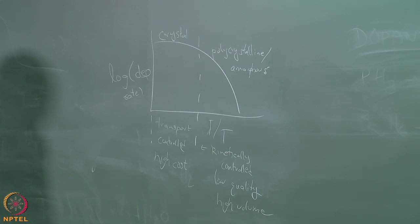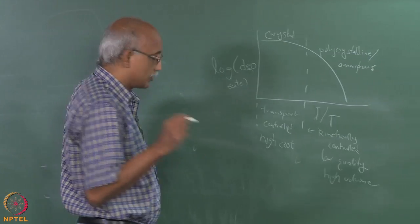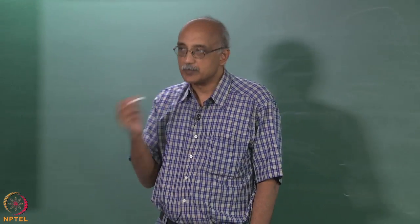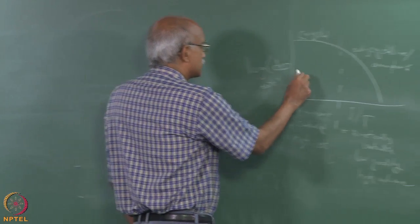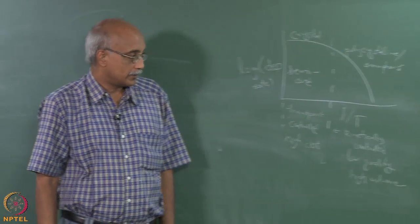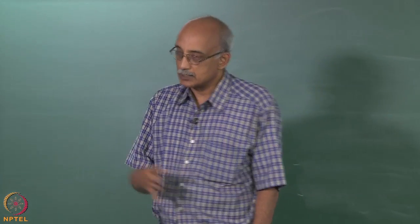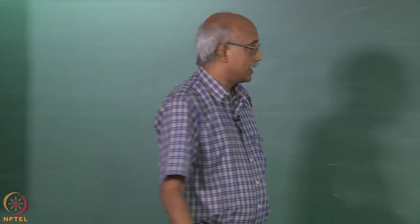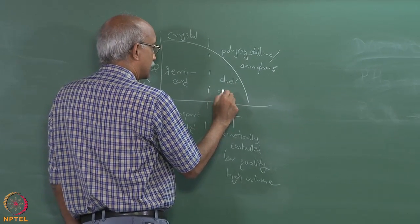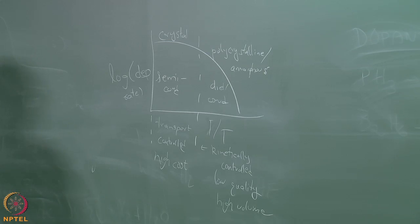For semiconductors versus insulators versus metals: semiconductor CVD is typically done in the transport-controlled regime where temperature does not have a significant influence on deposition rate, because a very crystalline structure is required. Dielectrics and conductors are more likely to be deposited on the right side of this curve — the kinetic-controlled regime.